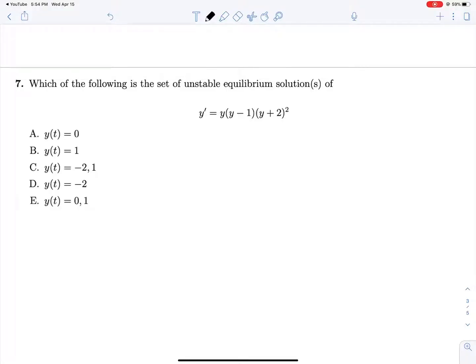Seven. Which of the following is a set of unstable equilibrium solutions of this equation here? So we're looking for solutions whose solution curves flow away from this value of y on both sides. We have y equals negative 2, y equals 0, and y equals 1. Those seem to be the three solutions for y prime equals 0.